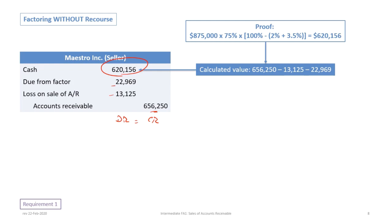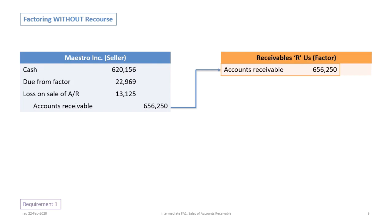As a proof: $875,000 in total receivables times 75% sold, multiplied by the leftover percentage after the 2% finance fee plus 3.5% holdback — those two together are 5.5%, so 100% minus 5.5% is 94.5%. Therefore, 94.5% of the 75% sold equals $620,156. Now we can move over to the factor side.